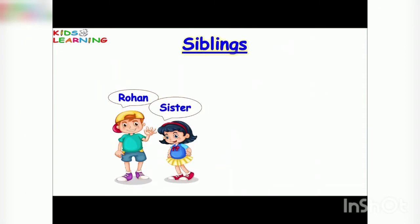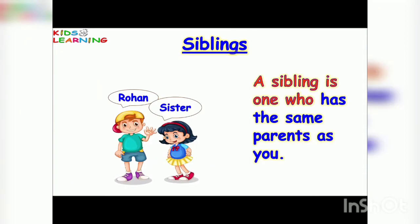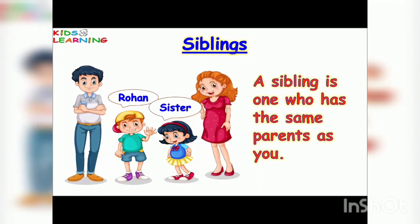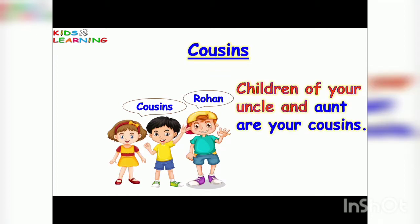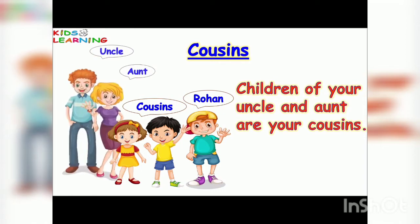Siblings: a sibling is one who has the same parents as you. Rohan has a sister — she is Rohan's sibling because they both have the same parents. Cousins: children of your uncle and aunt are your cousins. Rohan has two cousins, as they are children of his uncle and aunt.